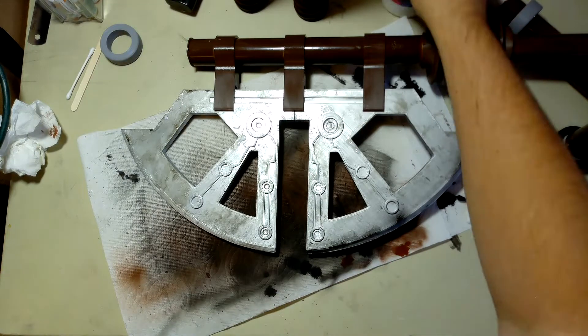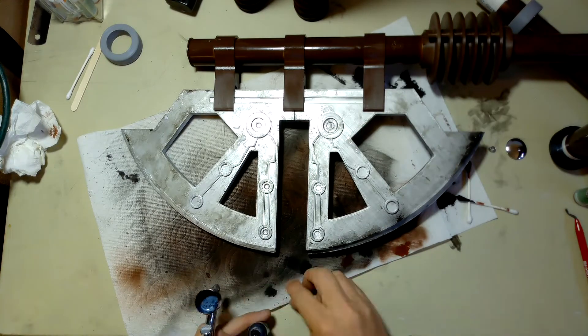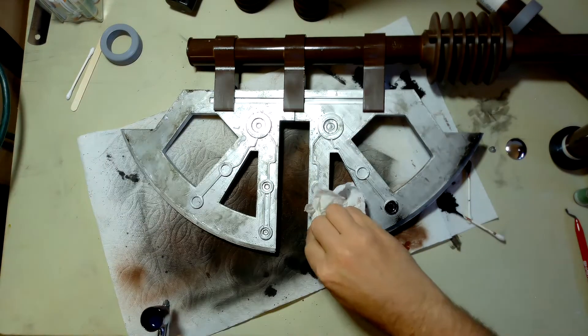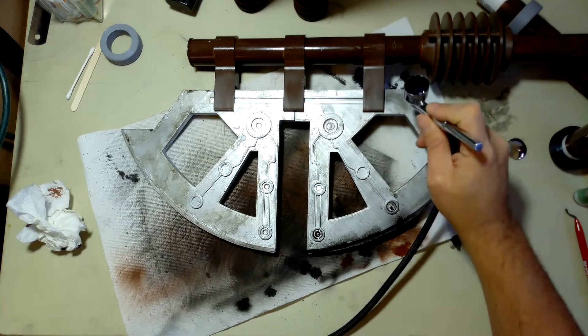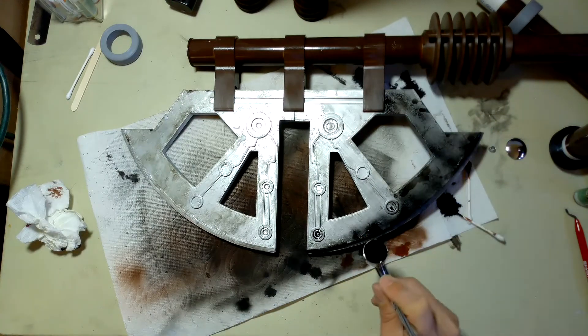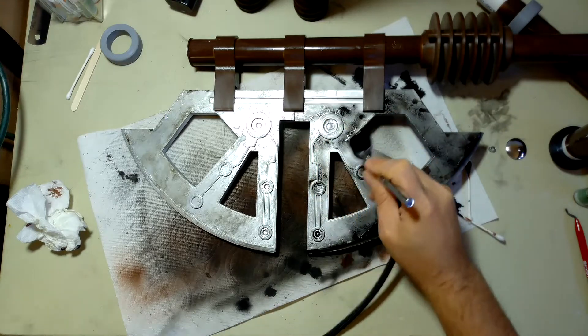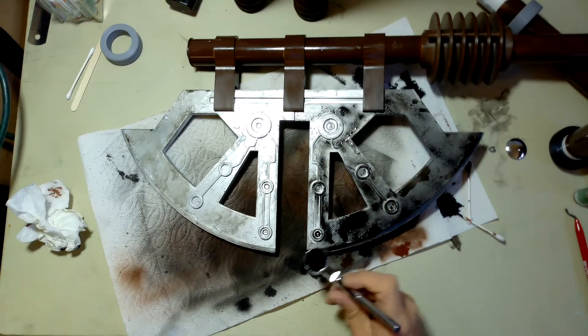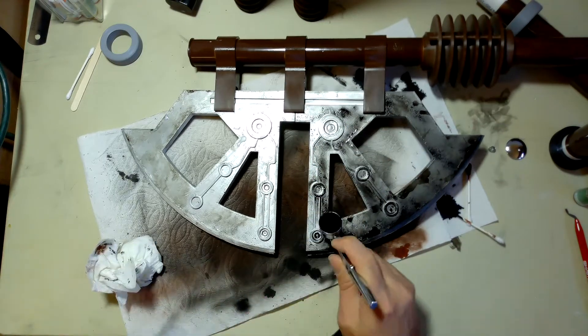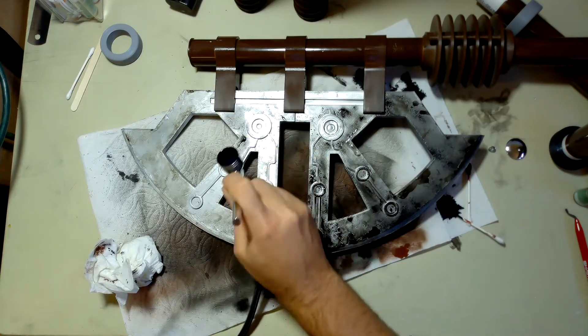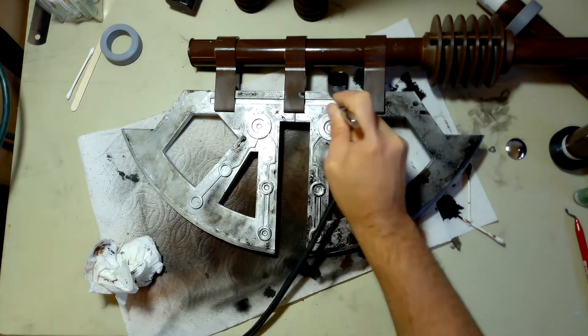I probably should have pre-sanded a little bit of the silver on the axe because the black paint seemed to not want to stick in the beginning. I don't know if it was the stuff I was using to thin it out or if it was the plastic. So I'm going to blame the plastic for now.